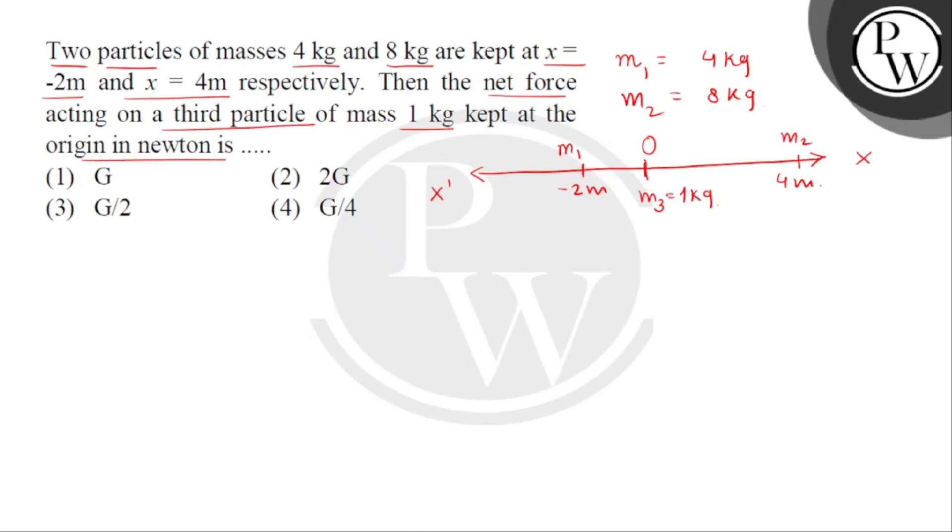Now, we have to find the net force on the third mass. Let this be F3 net. Let's consider Newton's law of gravitation, according to which F is given by, it is always attractive. This is the universal gravitation constant multiplied by the product of 2 masses divided by square of the distance between 2 masses.